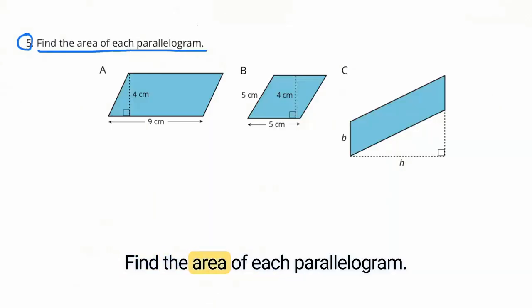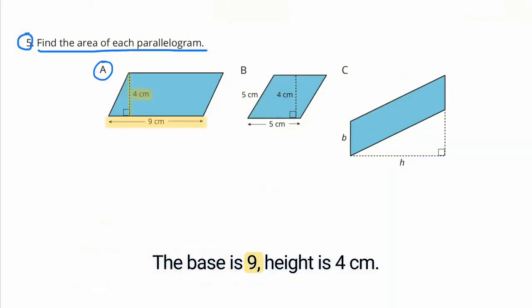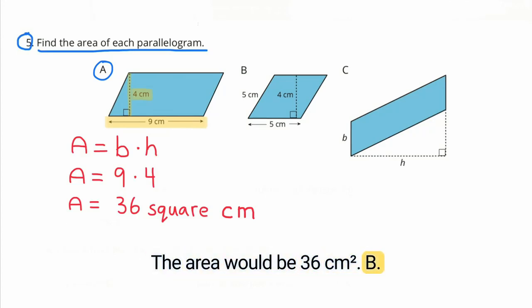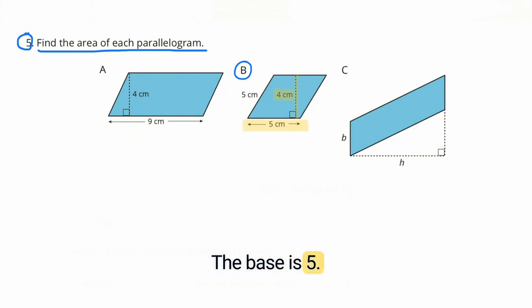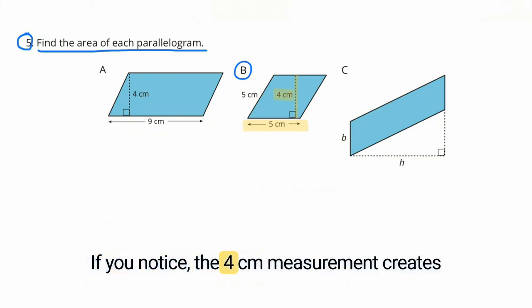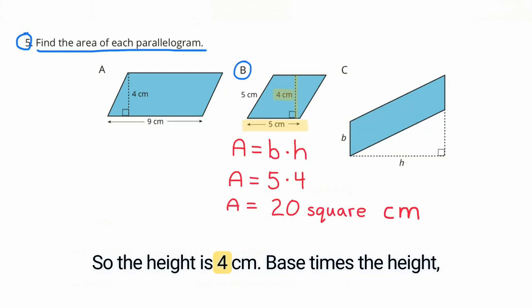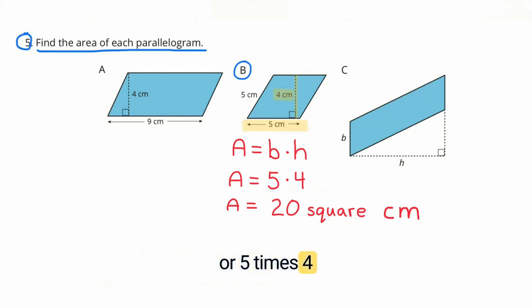Problem 5: Find the area of each parallelogram. A: The base is 9 centimeters and the height is 4 centimeters, so 9 times 4 is 36 — the area is 36 square centimeters. B: The base is 5 centimeters. Notice the 4-centimeter measurement creates a 90-degree angle with the base, so the height is 4 centimeters. Base times height, or 5 times 4, equals 20 square centimeters.